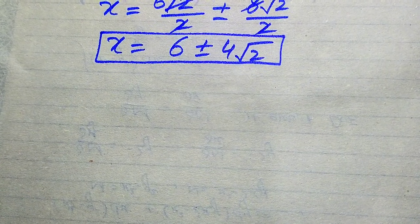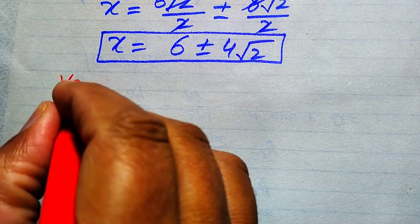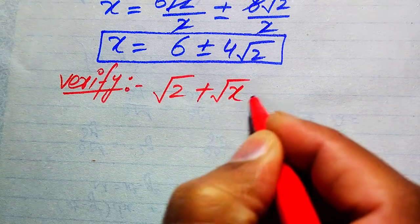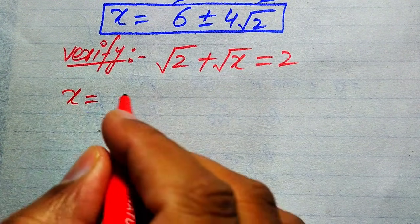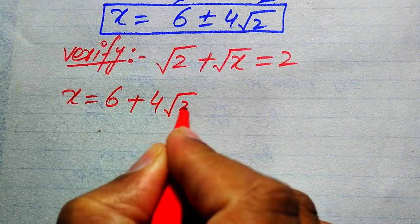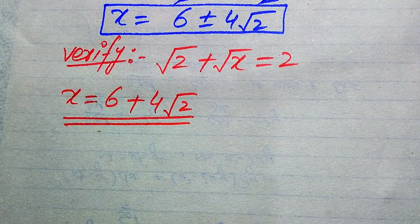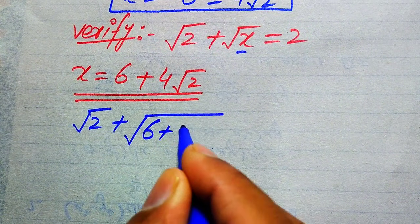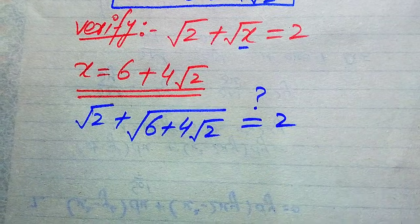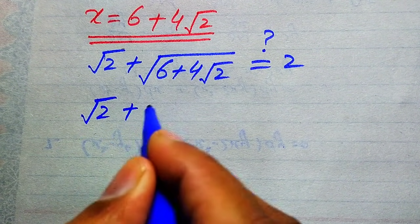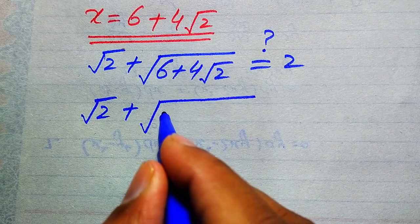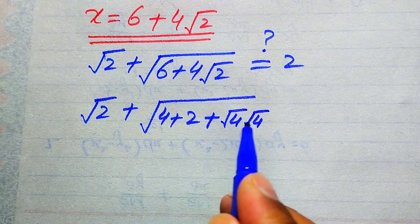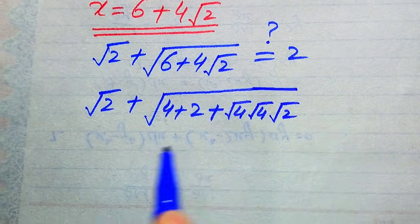In the next step we need to verify whether both roots are solutions of the given equation or extraneous roots. We copy down the given equation: square root of 2 plus square root of x equals 2. First we verify the positive value x equals 6 plus 4 times square root of 2. Substituting gives: square root of 2 plus square root of (6 plus 4 times square root of 2) equals 2 or not. Simplifying inside the square root: we write 6 as 4 plus 2 and write 4 as square root of 4 times square root of 4.